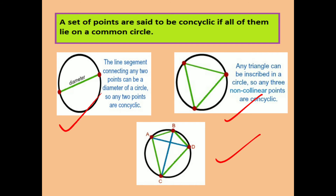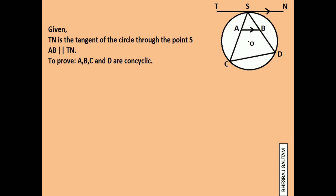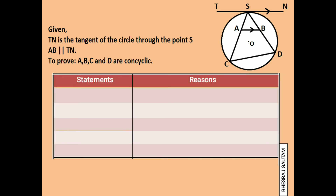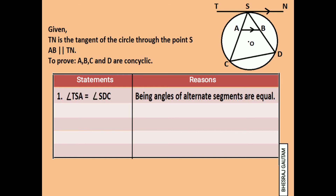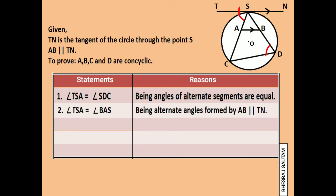Now, continuing the proof, we first draw the figure, mention the provided information, and draw the statement-reason table. Studying the figure, we can write that angle TSA is equal to angle SDC, as angle TSA is made by chord SC and angle SDC is made by arc SC. We call these the angles made by alternate segments, which are always equal. Also, angle TSA is equal to angle BAS, as they are alternate angles of the line segments.